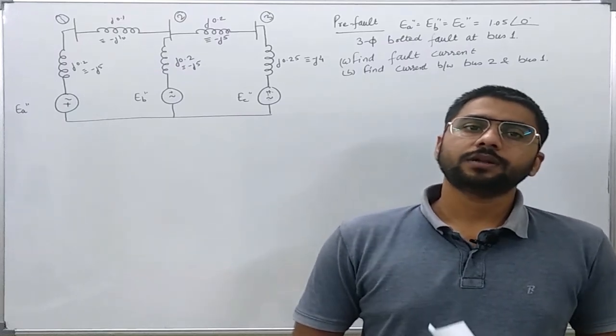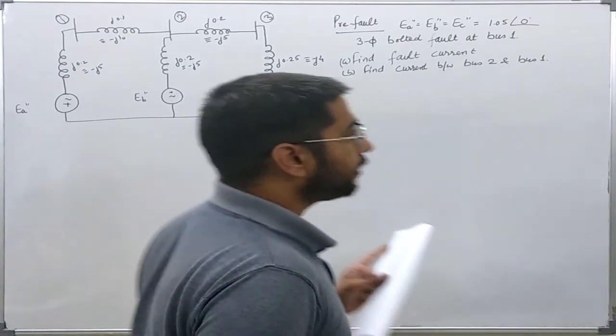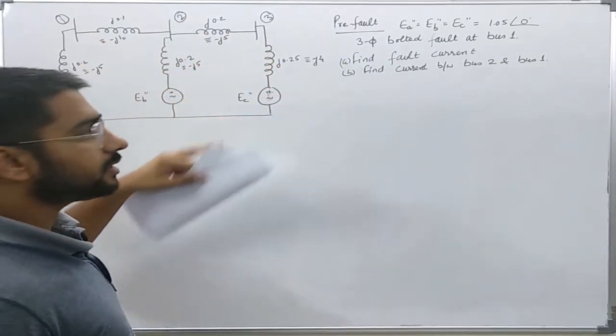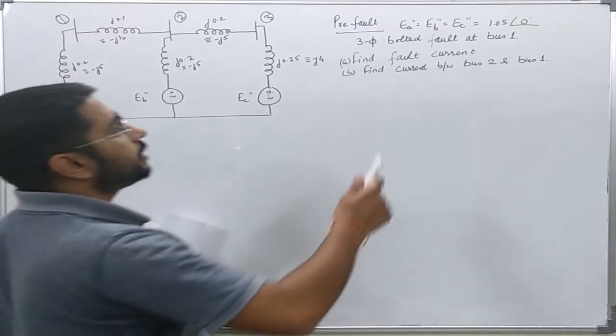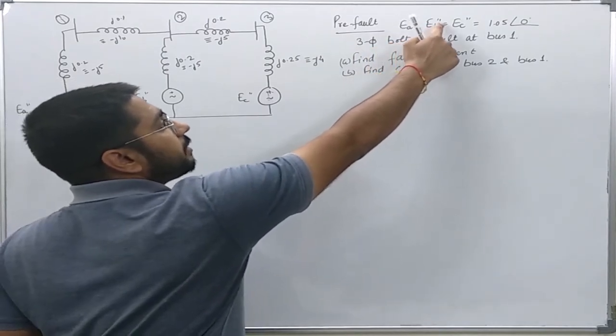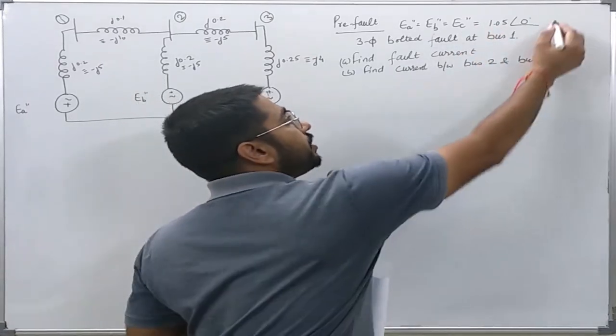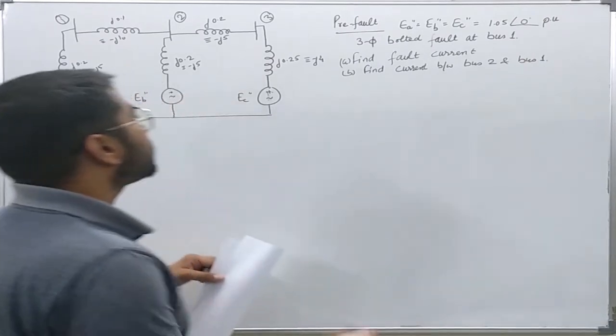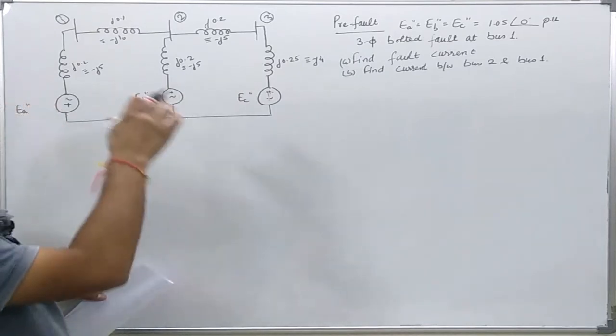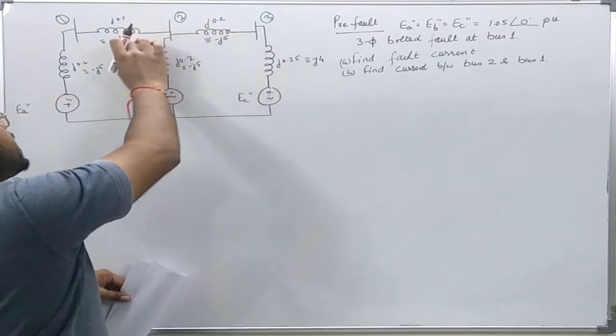Let us solve a numerical example for fault calculation using the bus impedance matrix. Here we are given a simple power system of three buses and the reference bus. The voltages before fault are e_a' = e_b' = e_c' = 1.05∠0° per unit. Various reactances are given and their admittances are written. Since it is easy to first find the bus admittance matrix, I have converted all the impedances into admittances also.